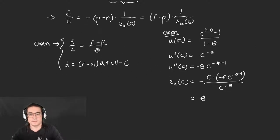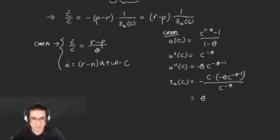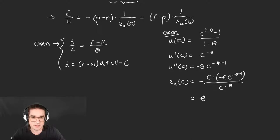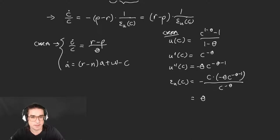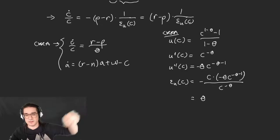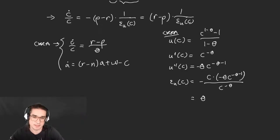The setup here is that we solve the consumer's problem in terms of asset choice A and consumption, given a path of interest rates R(t) and a path of wages W(t). That's a valid problem regardless of whether it's a general equilibrium model or just a micro-level problem — it's the micro-level problem given the macro-level endogenous variables like the interest rate and the wage.